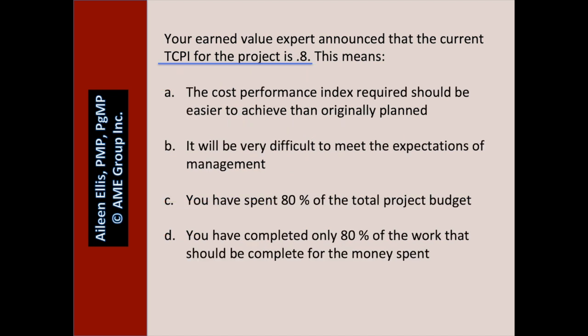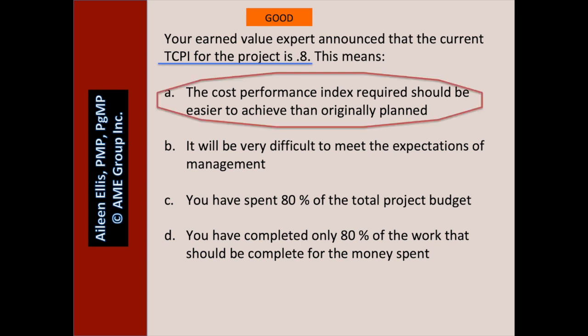Your earned value expert announced that the current TCPI for the project is 0.8. This means — pause the video and answer the question. A TCPI less than 1 — is that easier or harder to achieve compared to what we've been doing? A TCPI less than 1 is easier to achieve. A: the cost performance index required should be easier to achieve than originally planned — A is true. B: it will be very difficult to meet the expectations of management — since the TCPI is less than 1, it should be easier than it's been so far. C: you have spent 80% of the total budget — nothing to do with the question. D: you have completed only 80% of the work that should be complete for the money spent — that's not what this TCPI is about. This TCPI is a good TCPI.